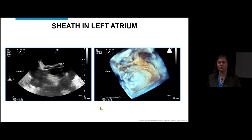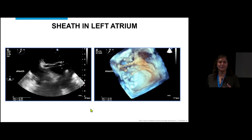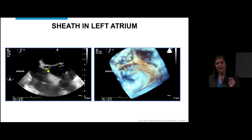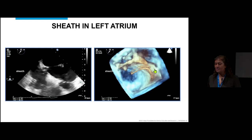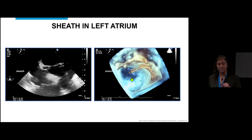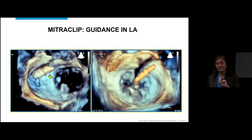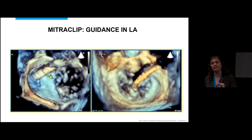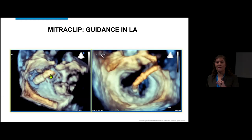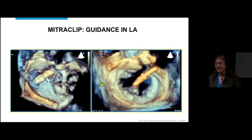During the procedure, we flip back and forth between 2D and 3D imaging. We pop across the fossa, put a dilator in, then the sheath goes in. On the surgeon's view, you can see the sheath coming across the atrial septum heading down toward the valve. As the clip comes out of the sheath, we watch to make sure it's not abutting against the lateral wall of the left atrium, and that it's free within the middle part of the LA.